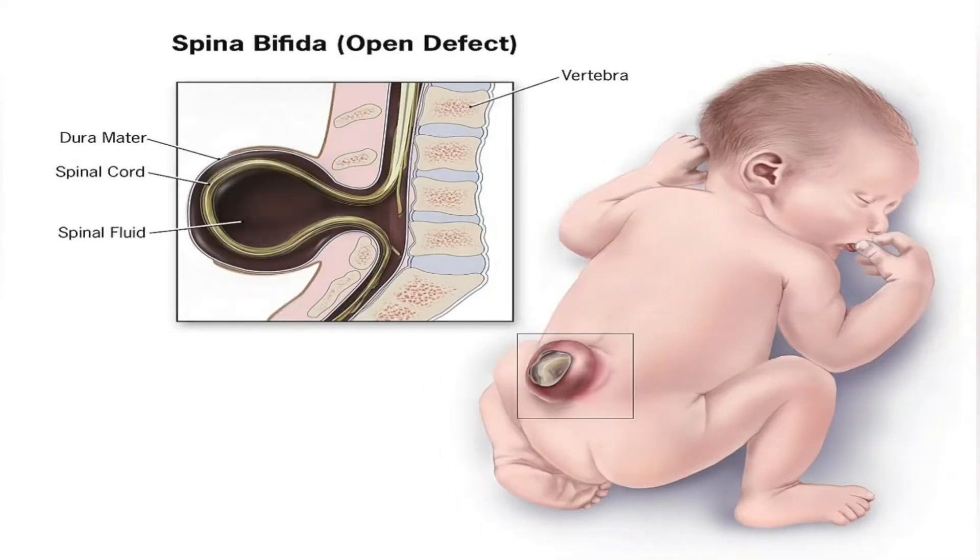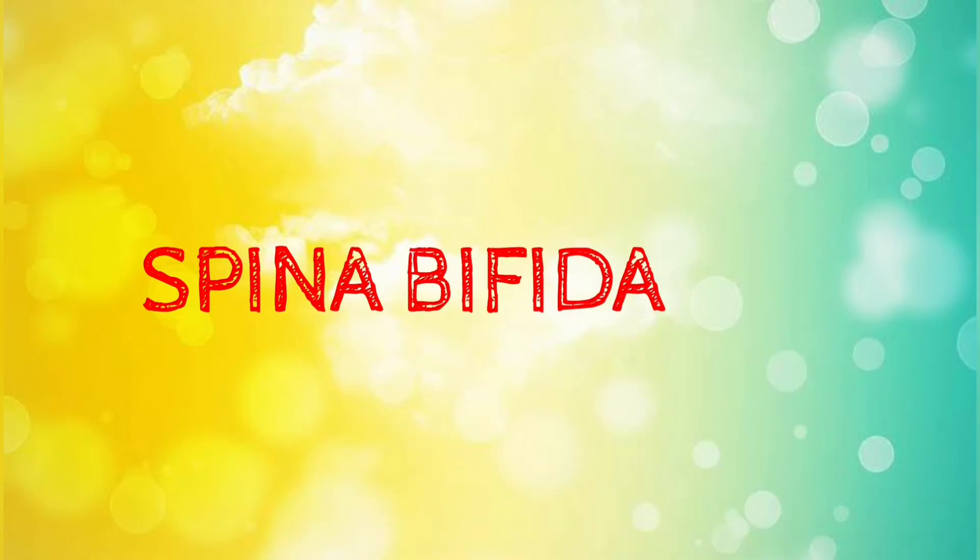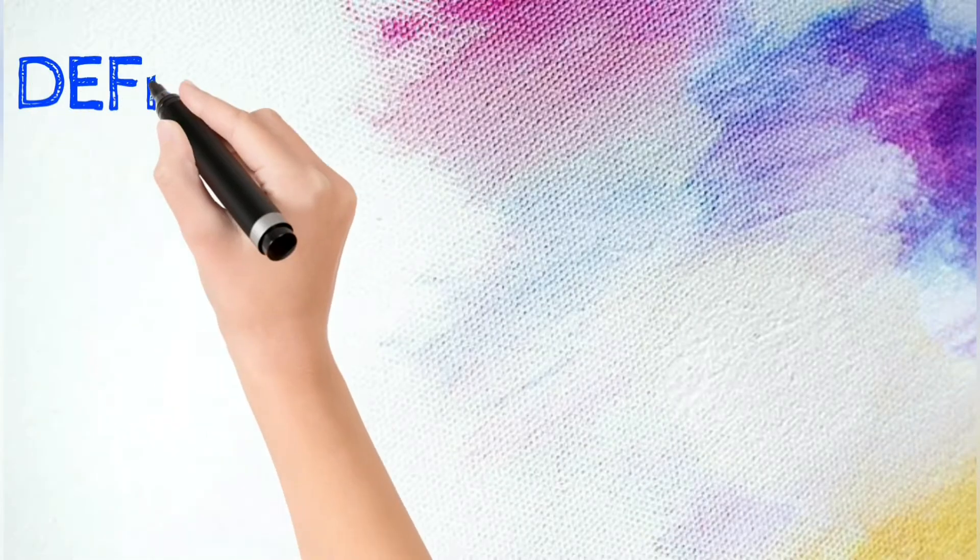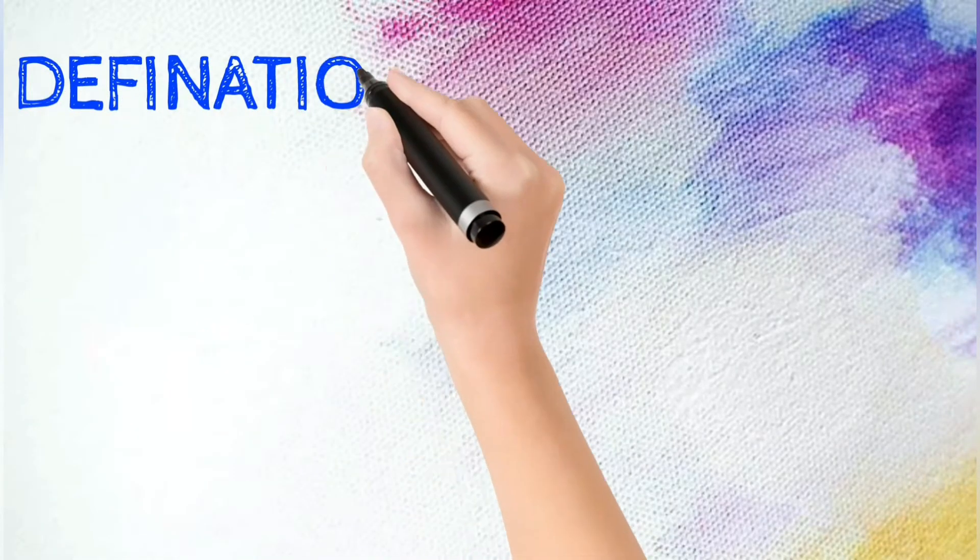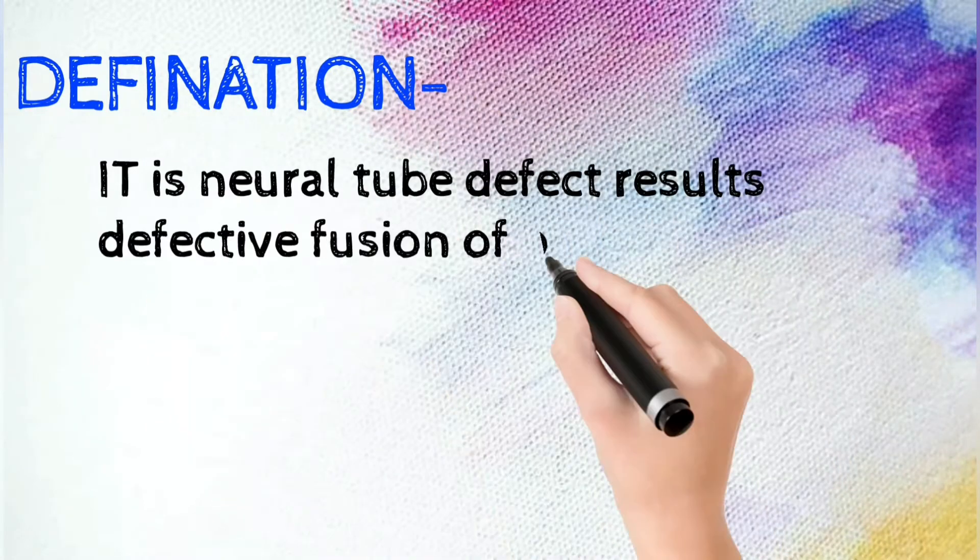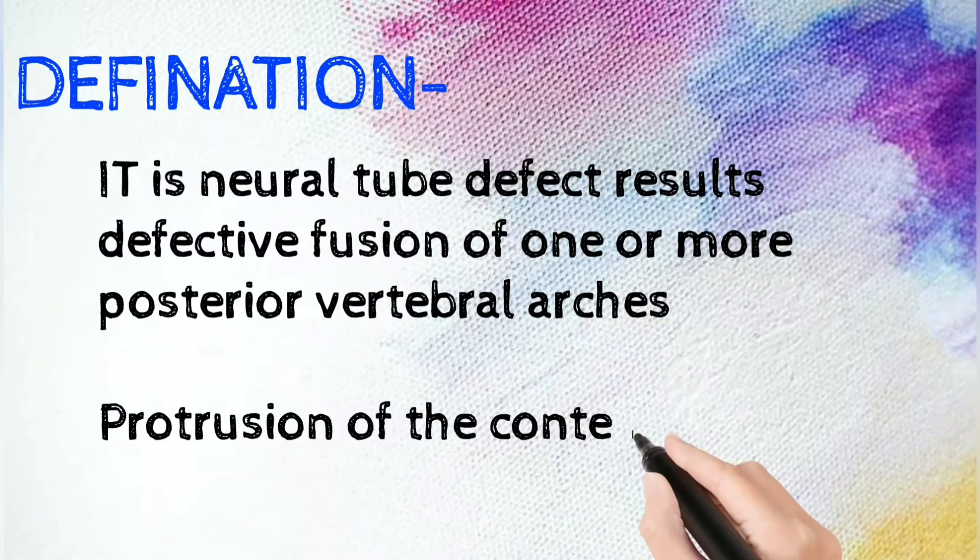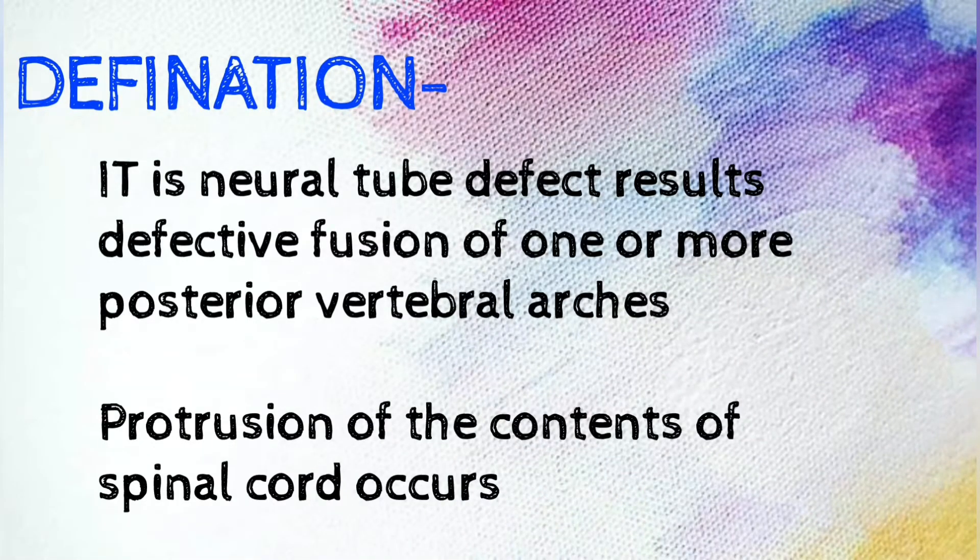So in this image you can see what is spina bifida. Let's start with the proper medical definition. The definition of spina bifida is it is a neural tube defect resulting from defective fusion of one and more posterior vertebral arches. Protrusion of the content of spinal cord occurs.